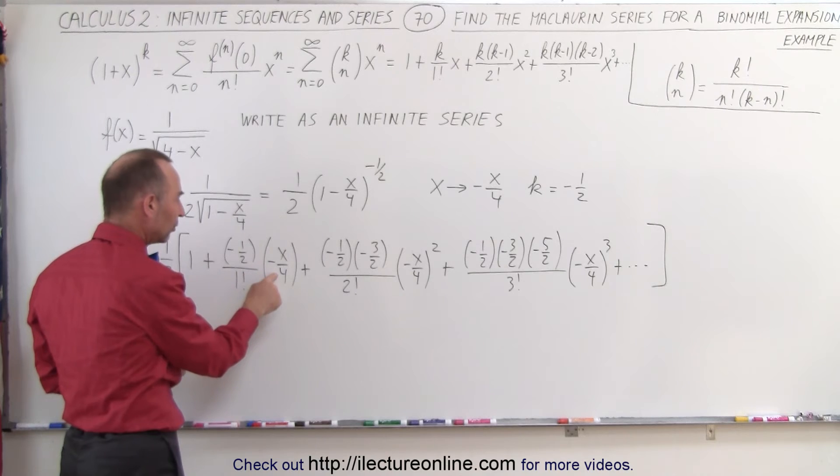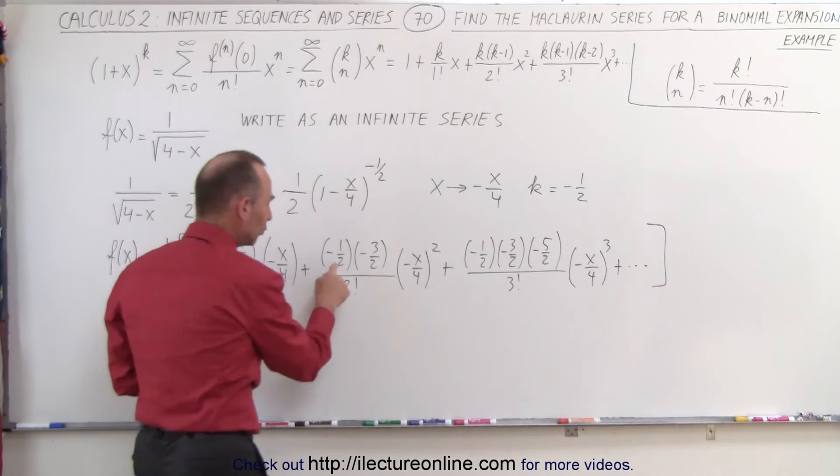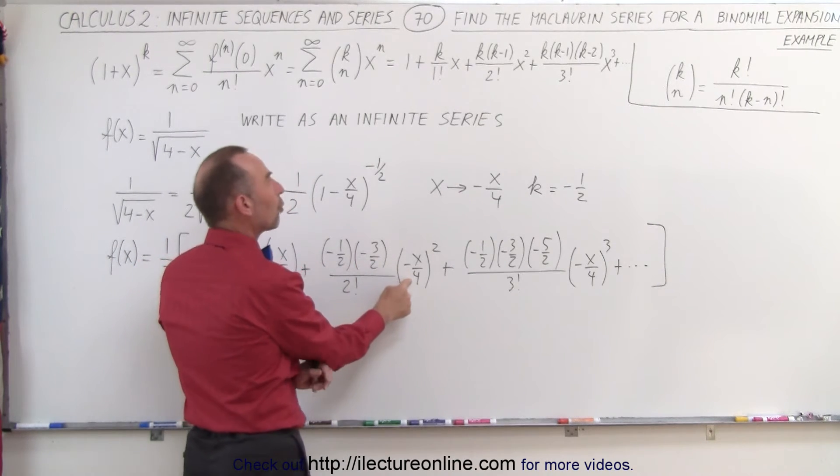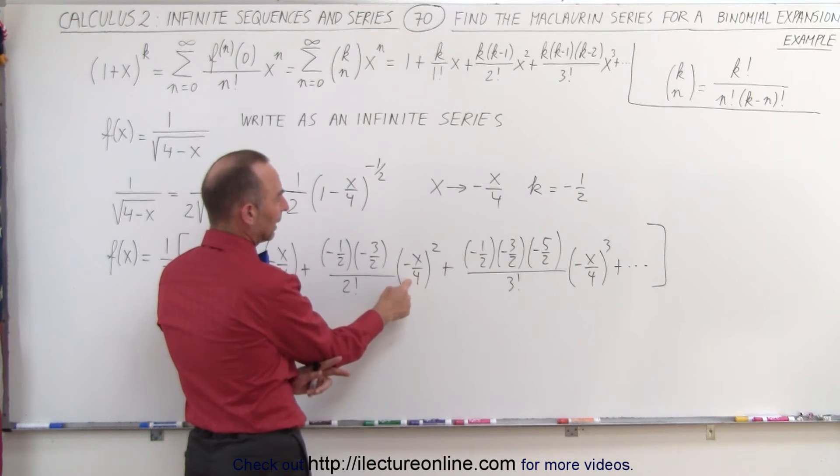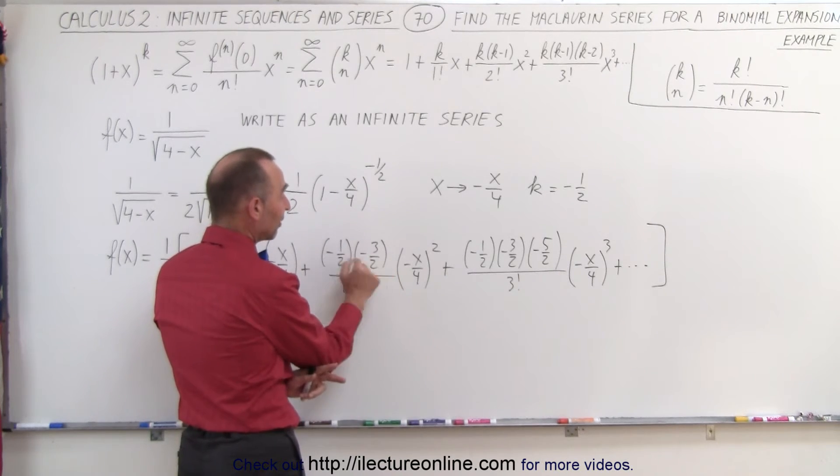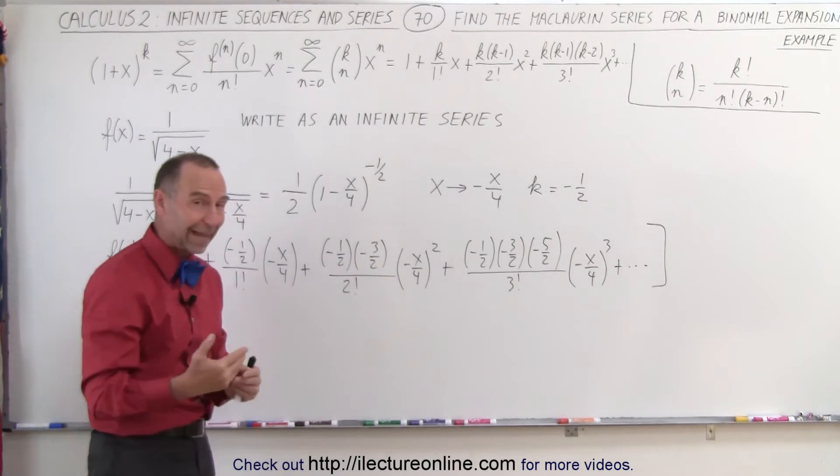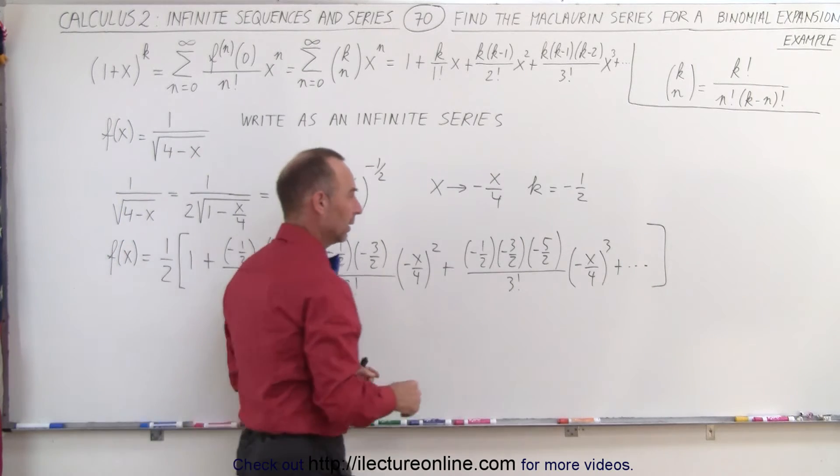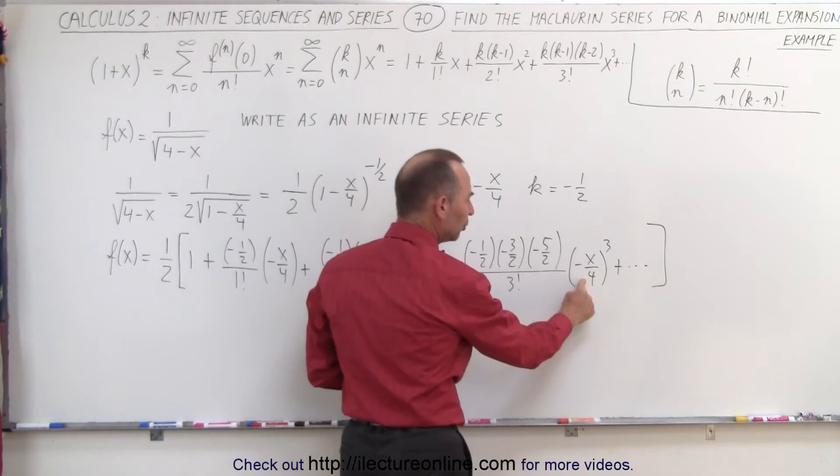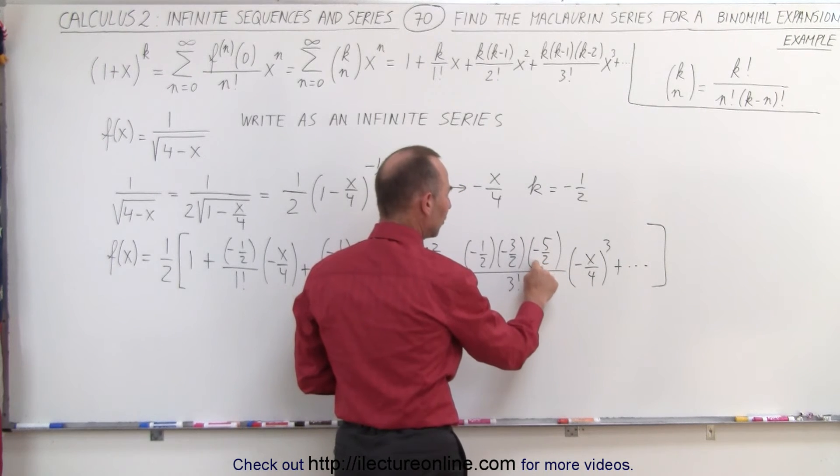Here we have 2 times 2 times 4 squared. Now 4 squared is 16 times 4 is 64. Now 64 that's 8 squared. Here we have 4 cubed that's 64 and we have 2 times 2 times 2 which is 8. 8 times 64, that's 512.